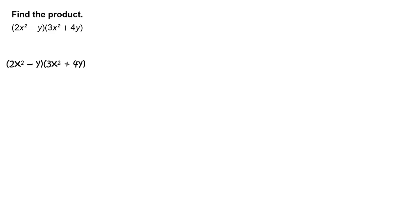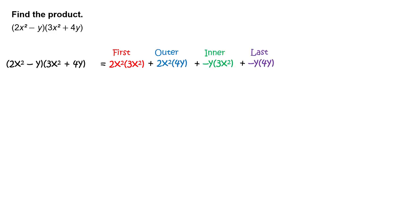One way to multiply binomials is to use the FOIL method. Add the products of first, outer, inner, and last terms. Or, write 2x squared times 3x squared plus 2x squared times 4y plus negative y times 3x squared plus negative y times 4y.